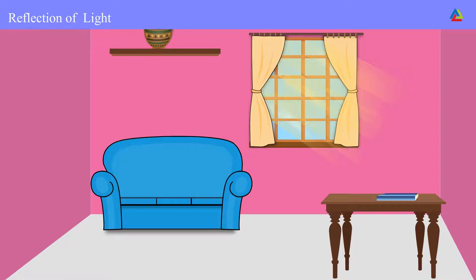To see objects in the dark we need light. Objects reflect light that falls on them, and this reflected light, when received by our eyes, enables us to see things. Let's now study the phenomenon of reflection in detail.